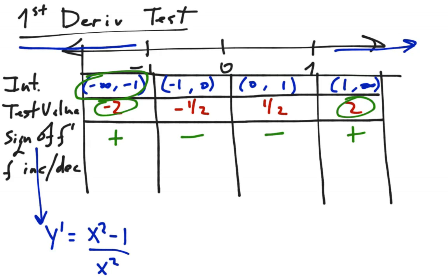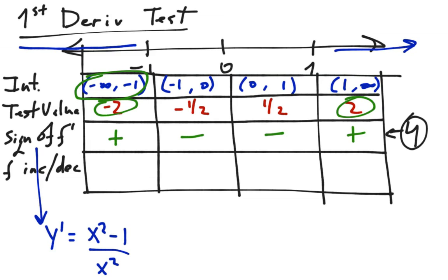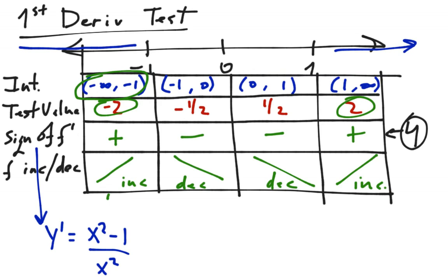With the sign of f prime determined, the bottom row of the chart is easy. If f prime is positive, f is increasing. If f prime is negative, f is decreasing. So: increasing, decreasing, decreasing, increasing.